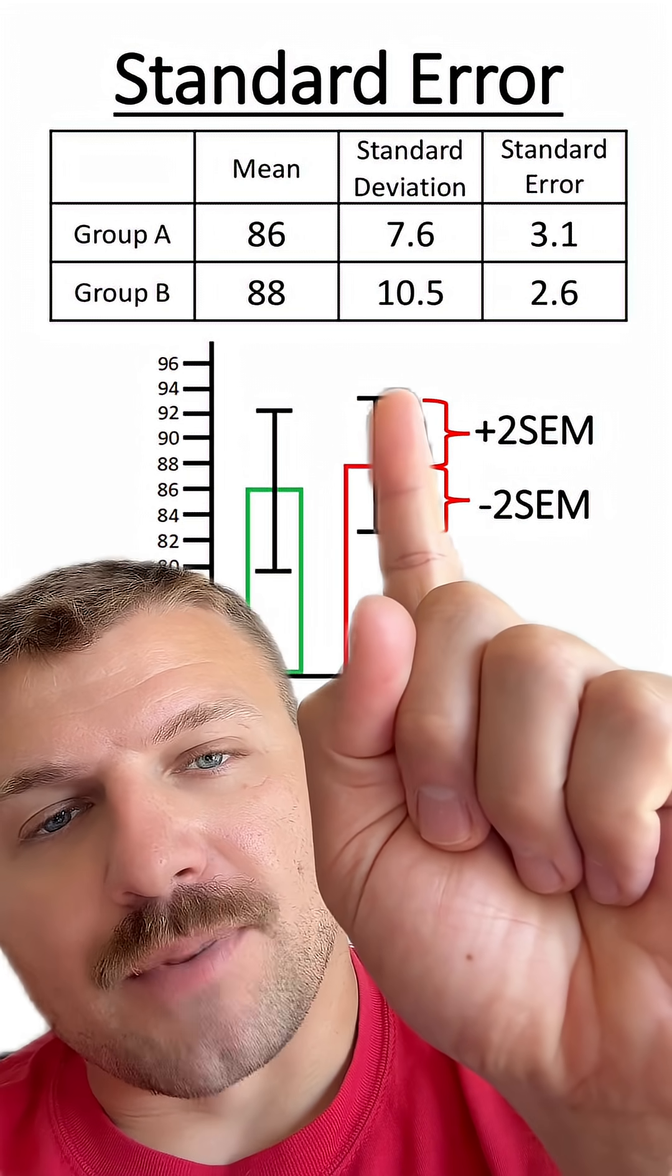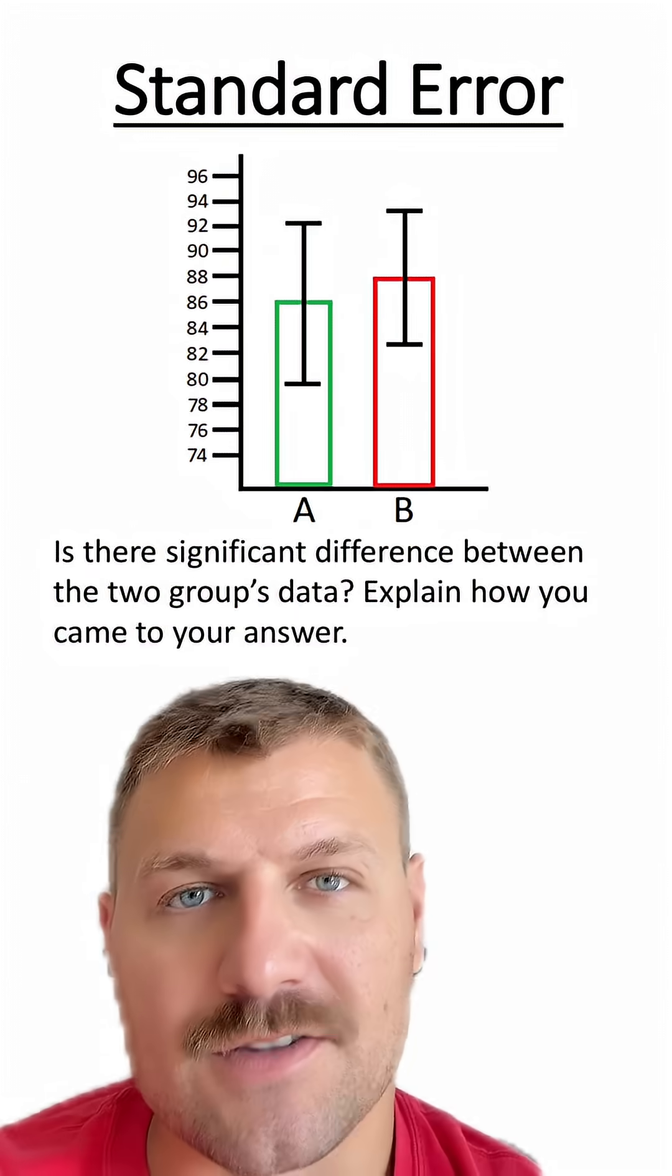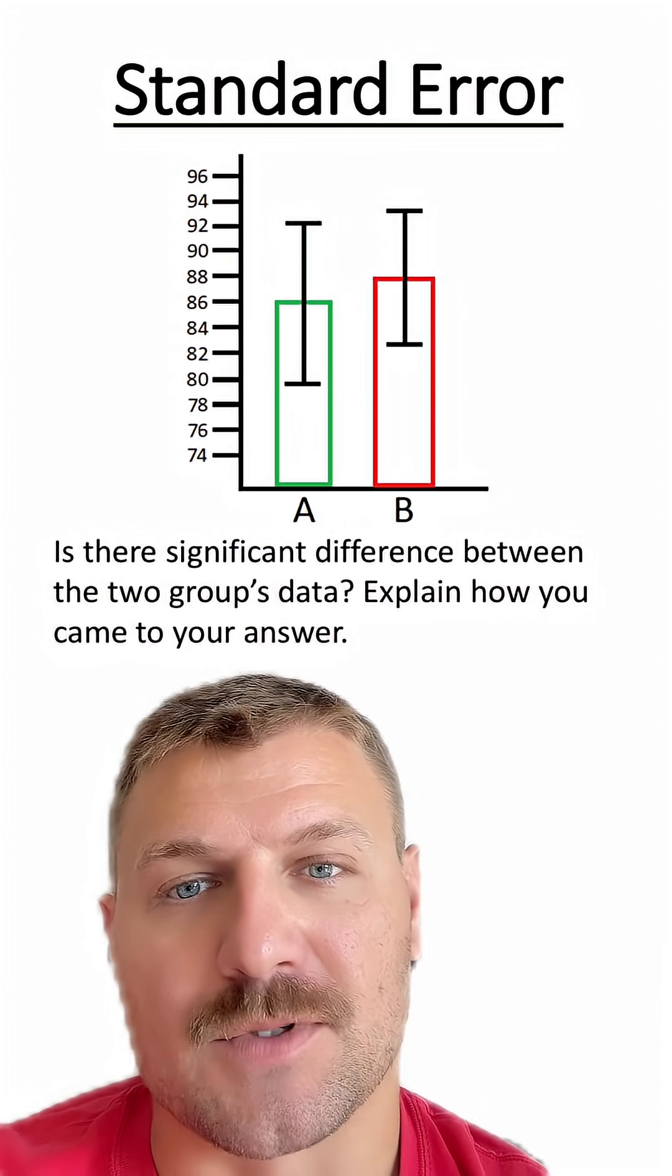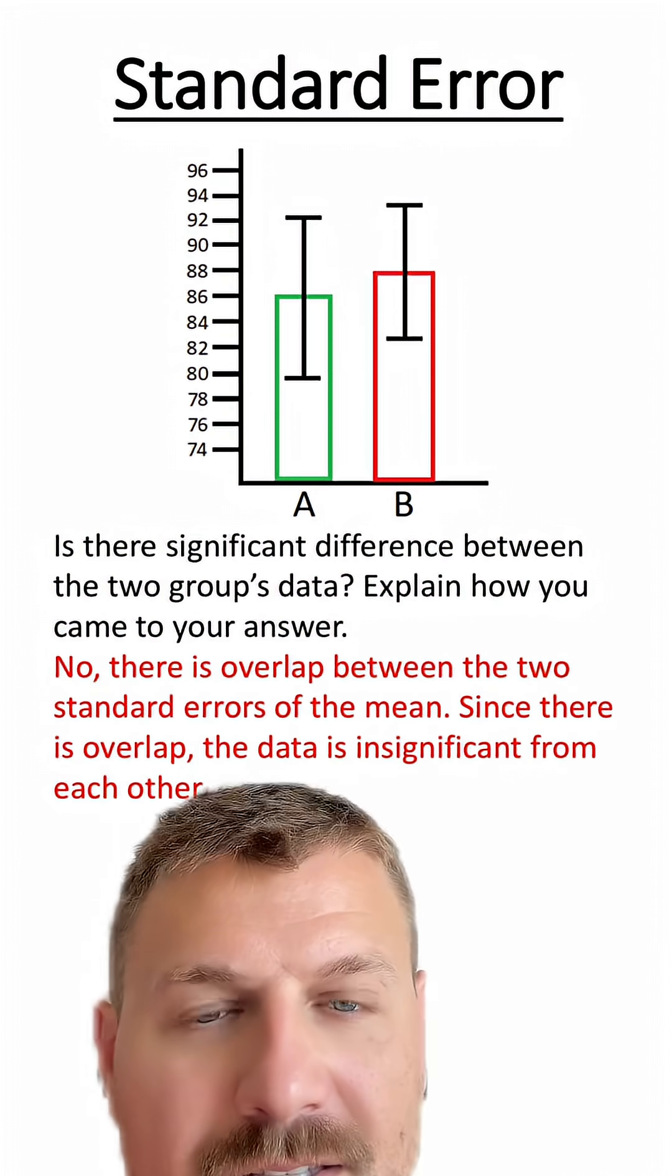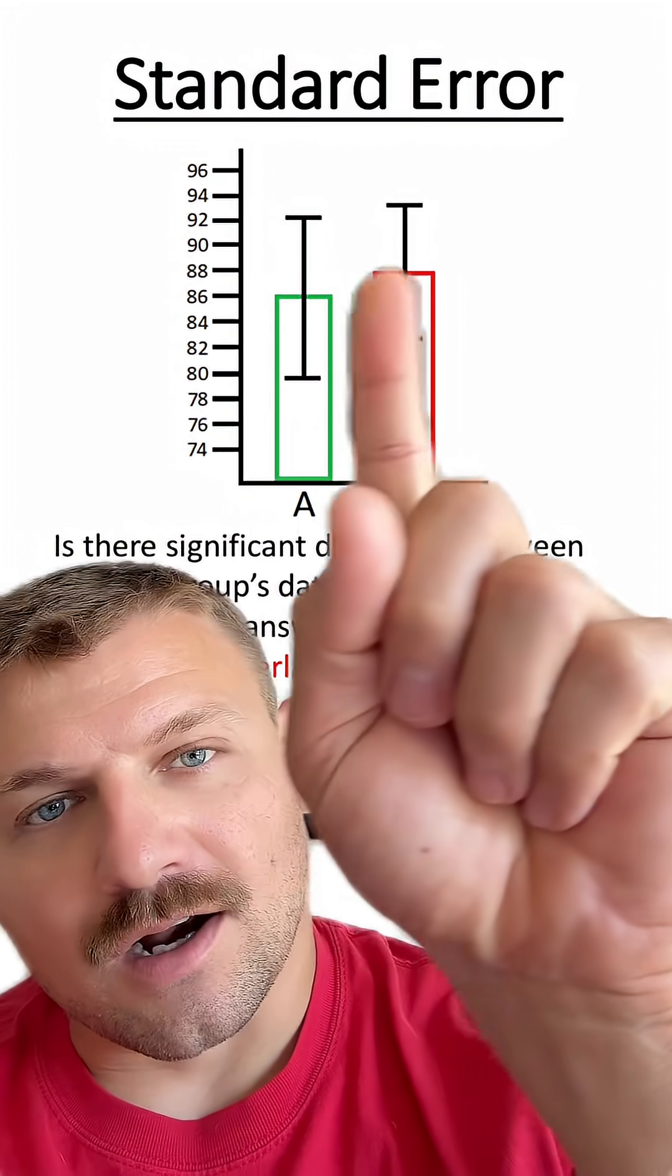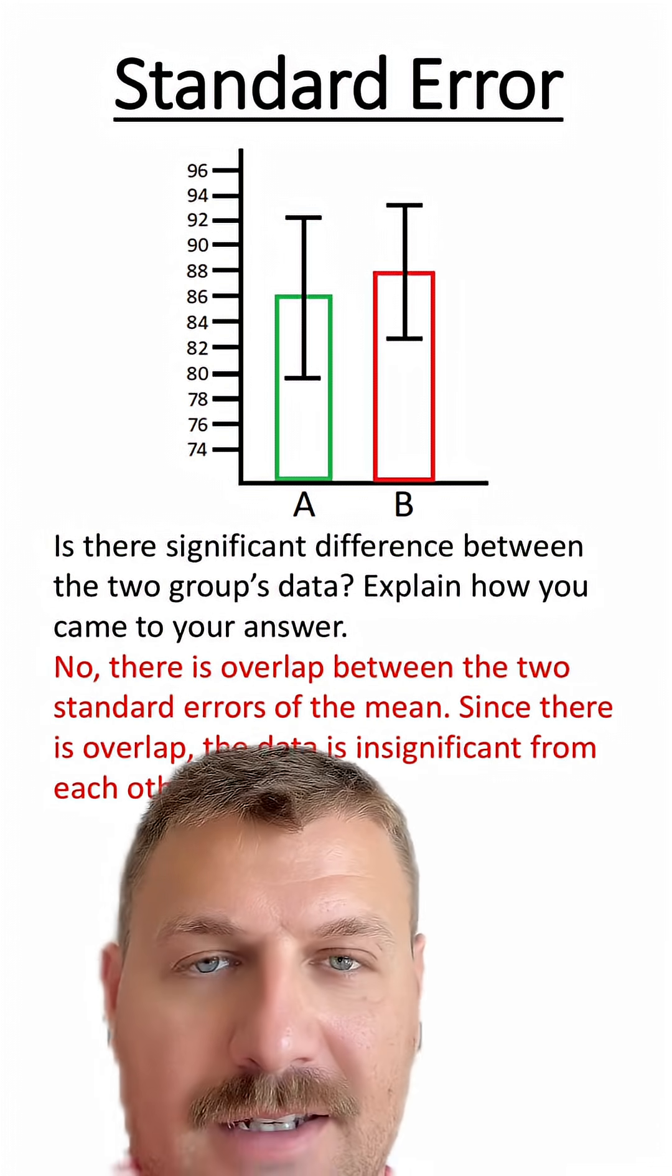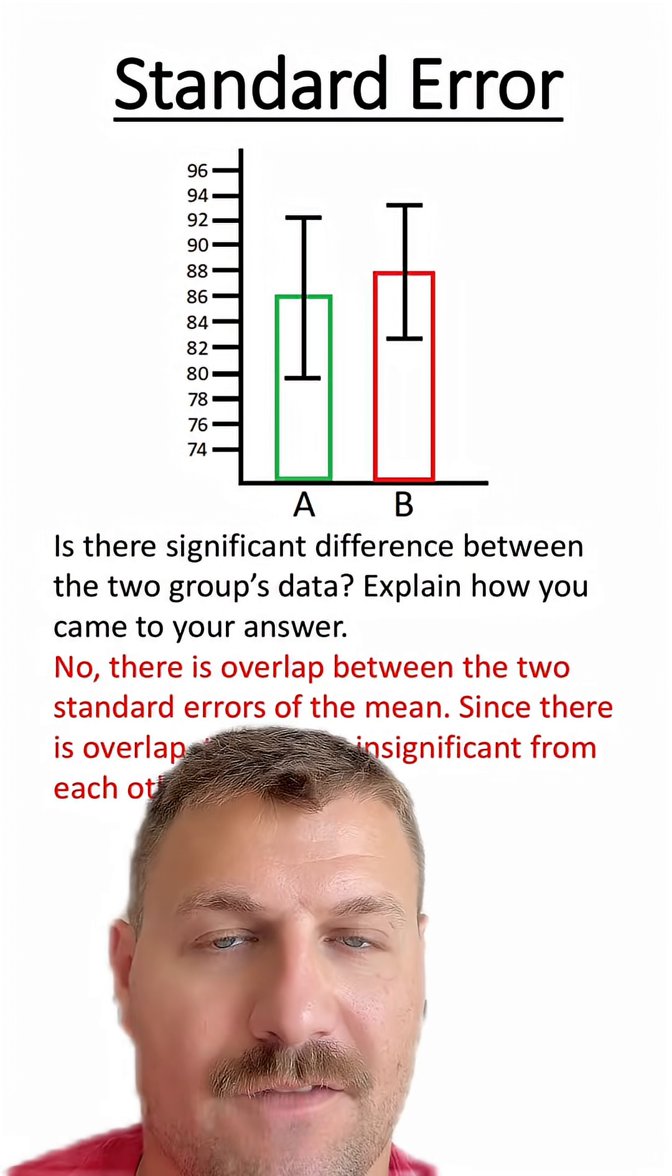You can see we're going in both the positive and negative direction. Now let's answer this question: Is there a significant difference between the two groups' data? Explain how you came to this answer. Since the error bars here overlap, that means the data is not significantly different from each other.